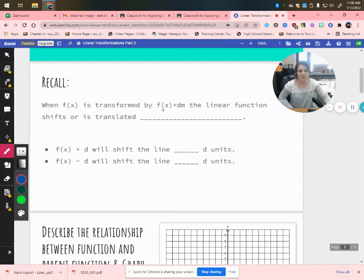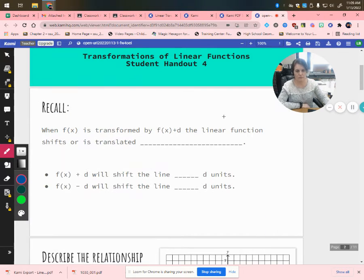So recall that when f(x) is transformed by f(x) plus d, the linear function shifts or is translated. Now think about a linear function. We've got this graph here. We can either shift it left and right. When I'm talking about translations, that's sliding. We're not expanding, we're not dilating, we're not rotating. A translation is just a slide. So we can either slide left or right or we can slide up or down.